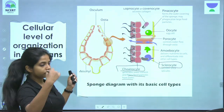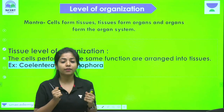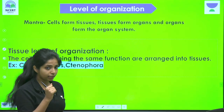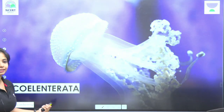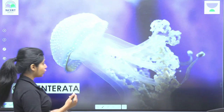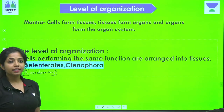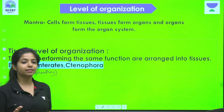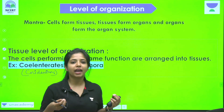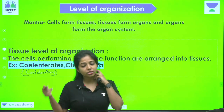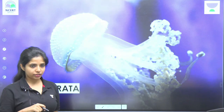The next level is tissue level of organization, where cells come together to form tissues. This is shown by Coelenterata and Ctenophora. Coelenterata are also known as Cnidarians. For example, if you know that a given organism is a Coelenterate, you immediately know it has tissue level of organization.